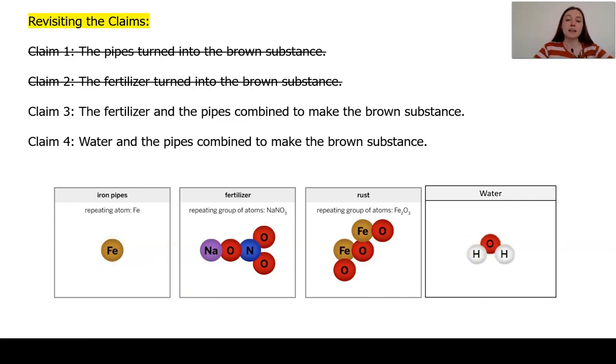However, claim four is very unlikely due to the fact that nothing changed about the pipes in the recent years in Westfield. Water was always running through those pipes, and so it doesn't make sense that this caused a reaction if the water and the pipes had been in contact often throughout the years. The most likely claim then is that the fertilizer and the pipes underwent a chemical reaction and rearranged to form something new.